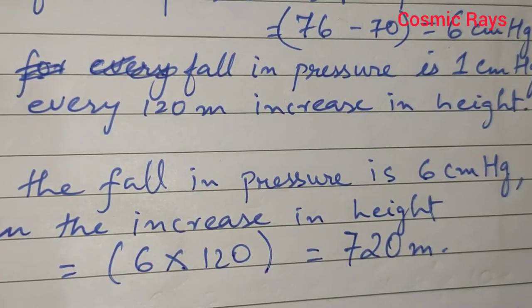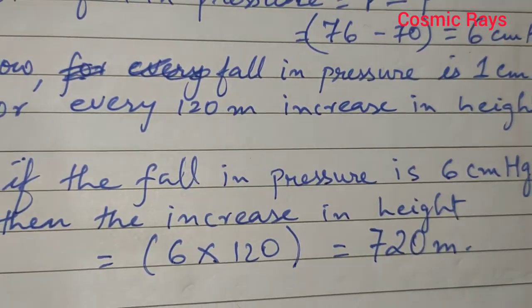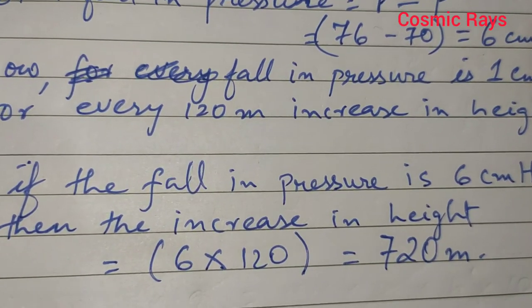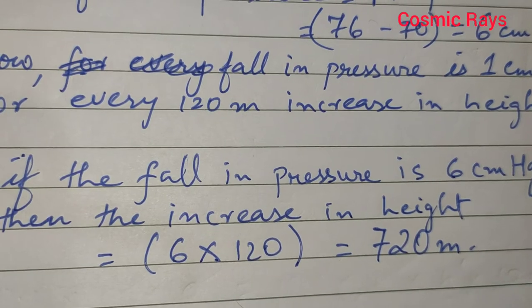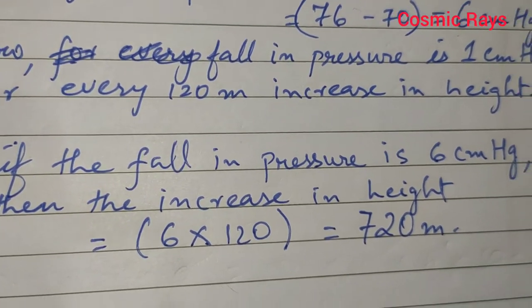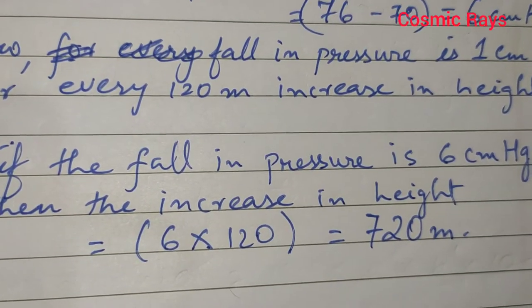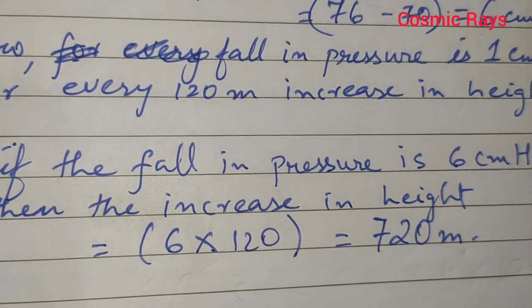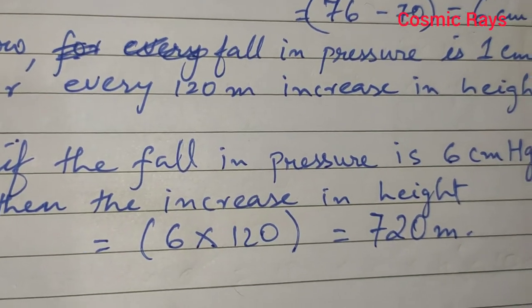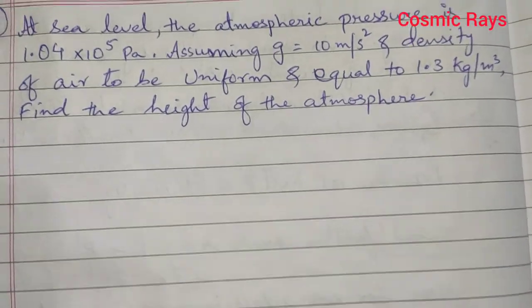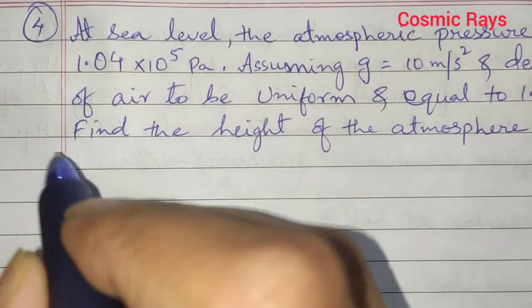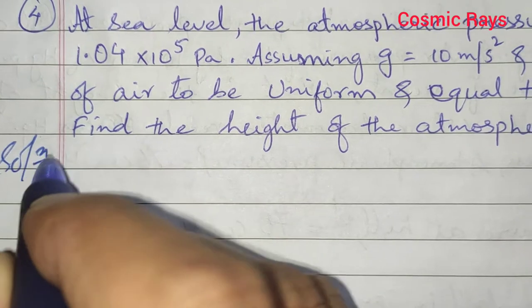The height of the hill is 720 meter. We also assume that atmospheric pressure falls linearly with ascent — this is discussed in the chapter and is also in the textbook.